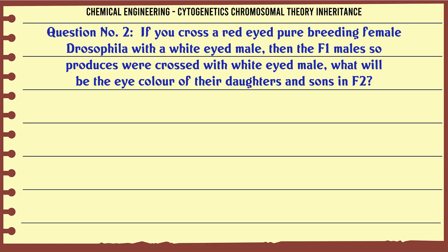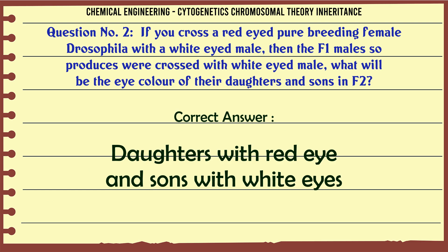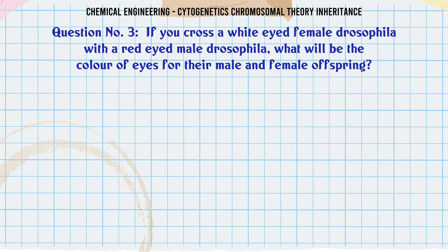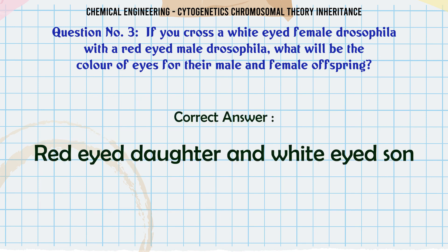If you cross a red-eyed pure-breeding female Drosophila with a white-eyed male, then the F1 females so produced were crossed with white-eyed males — what will be the eye color of their daughters? The correct answer is: red-eyed daughters and white-eyed sons.